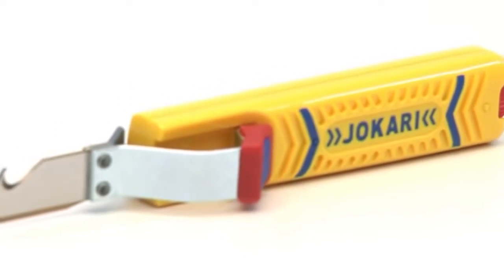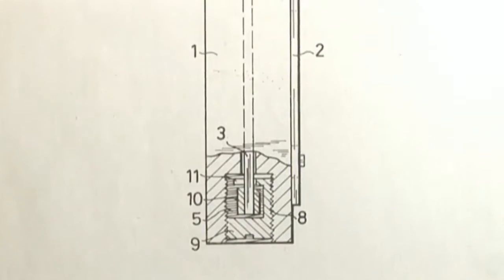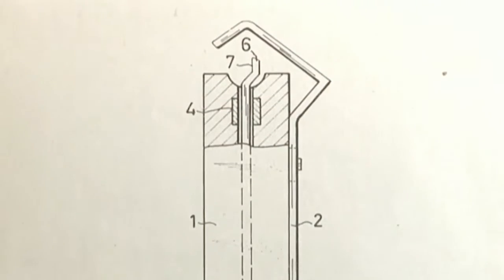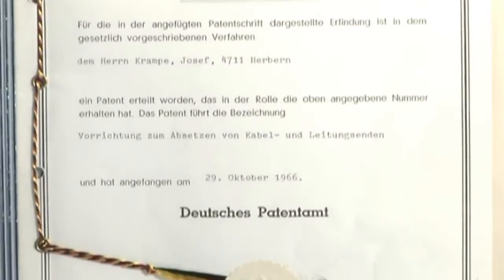Jokari is a family company in the third generation. Jokari is not only a company name, Jokari is a synonym of a small cable knife. This cable knife was invented by Josef Krampel. He got the patent in 1966.